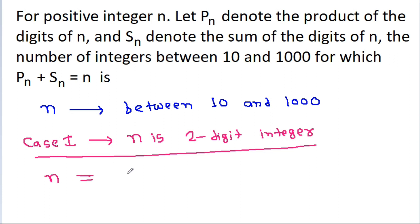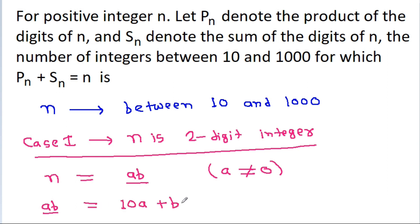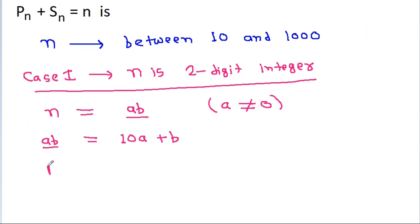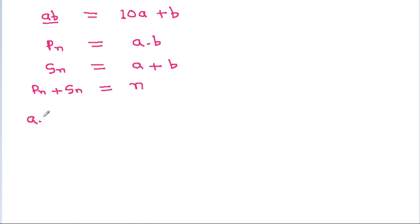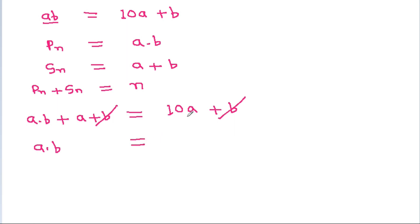Then n will be equal to AB, where A cannot be equal to 0, and AB will be equal to 10A plus B. Pn will be equal to A times B and Sn will be equal to A plus B. We have Pn plus Sn equal to N, so A times B plus A plus B equals 10A plus B. The B terms cancel and we get A times B equal to 9A.